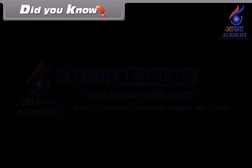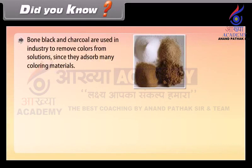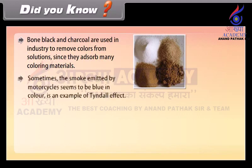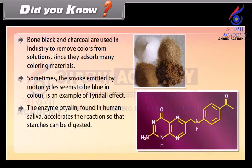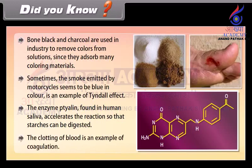Did you know? Bone black and charcoal are used in industry to remove colors from solutions since they absorb many coloring materials. Sometimes smoke emitted by motorcycles seems to be blue in color — this is an example of the Tyndall effect. The enzyme ptyalin found in human saliva accelerates the reaction so that starches can be digested. The clotting of blood is an example of coagulation.